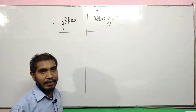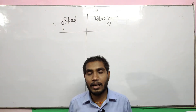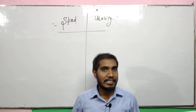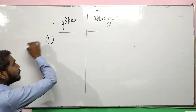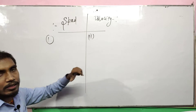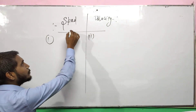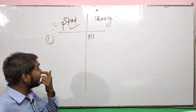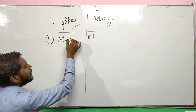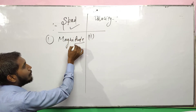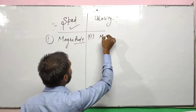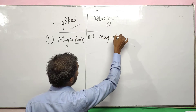Speed is the scalar quantity — that is the first difference — and velocity is the vector quantity. Speed is the scalar quantity means speed has only magnitude. To express speed, we only need the magnitude. And to specify the velocity, we need both magnitude as well as direction.